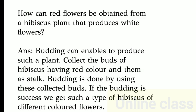How can red flowers be obtained from a hibiscus plant that produces white flowers? The method is budding. Budding enables us to produce such a plant. Collect the buds of hibiscus having red color and use them. Budding is done using these collected buds. If the budding is successful, we get a hibiscus plant with flowers of different colors.